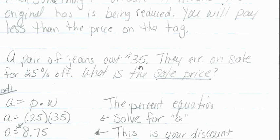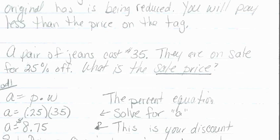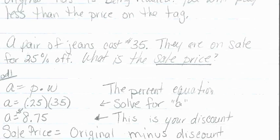To find the sale price: if my pants were $35 and I'm saving $8.75, what do you think I'm going to do with the two numbers? Hopefully you're saying subtraction. So sale equals the original minus the discount. I'm going to take $35 original minus my discount of $8.75, and I get $26.25.